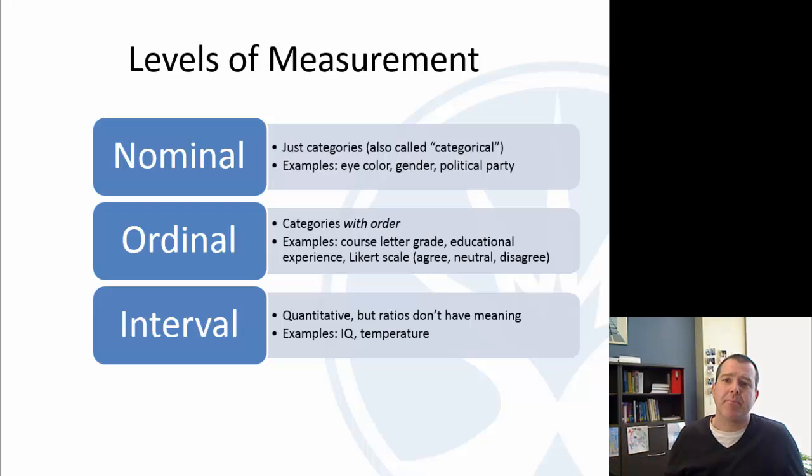But you could say an interval, like there's 20 percentage points higher, 20 percentage points higher. Temperature, same thing. If we're looking at degrees, say we pick degrees Fahrenheit. Is 60 twice as warm as 30? It's 30 degrees warmer, and then 90 is 30 degrees warmer than 60. So that interval has meaning, but the ratio doesn't really have meaning. Is 90 really twice as warm as 45? So that ratio doesn't have meaning.